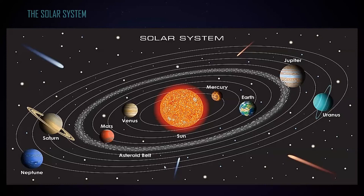Our solar system consists of a sun and all the objects which orbit it, including all the stellar objects which are orbiting the sun. There are eight planets — Pluto is not added as a planet.